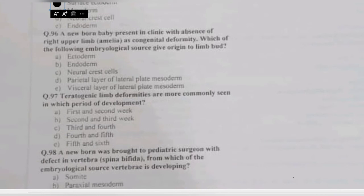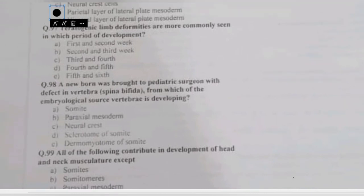Question 96: a newborn presents with upper limb amelia as a congenital abnormality. Which embryological source gives origin to the limb bud — ectoderm, endoderm, neural crest cells, parietal layer of lateral plate mesoderm, or visceral layer? Limb buds are visible on the 4th week of development on the ventrolateral surface of the body and are directly developed from the parietal layer of the lateral plate mesoderm. Teratogenic limb deformities are most commonly seen in the 4th and 5th week.